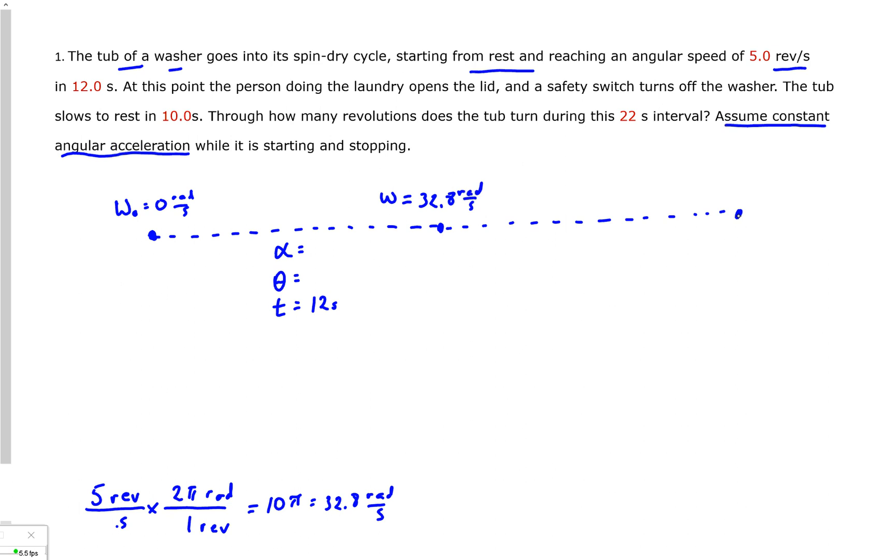If you remember, what makes a two-part problem unique is that the final velocity for part one becomes your initial velocity for part two. And it says they open the lid, and the thing goes to rest. So that means my final angular velocity for part two is zero rads per second. And it says the only other thing it tells us, theta, alpha, theta, T. The only other thing that it tells us is that it takes 10 seconds for part two.